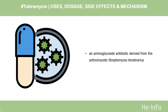Pharmacodynamics: Tobramycin is an aminoglycoside antibiotic derived from the actinomycete Streptomyces tenebrarius. It has a broad spectrum of activity against gram-negative bacteria, including Enterobacteriaceae, Escherichia coli, Klebsiella pneumoniae, Morganella morganii, Moraxella catarrhalis, Proteus spp., Haemophilus spp., Acinetobacter spp., Neisseria spp., and importantly, Pseudomonas aeruginosa.